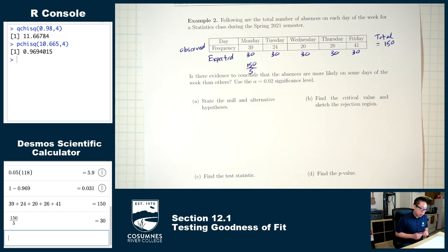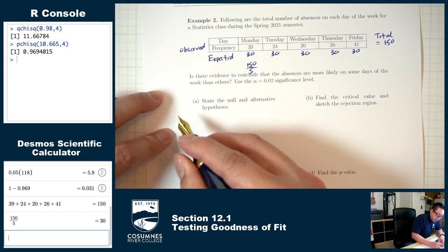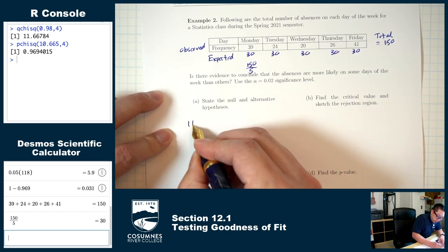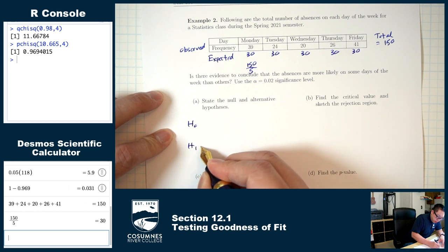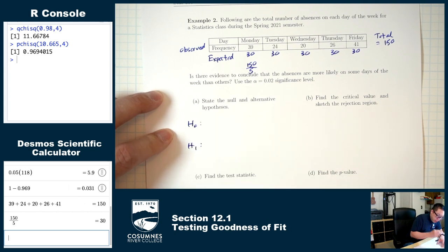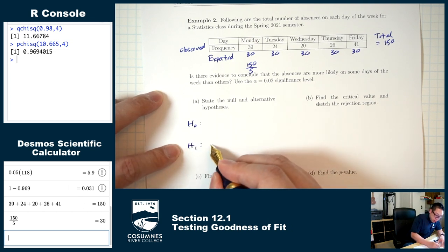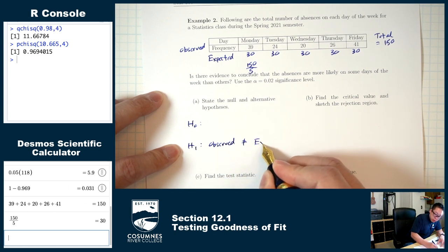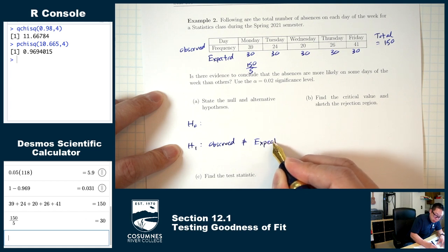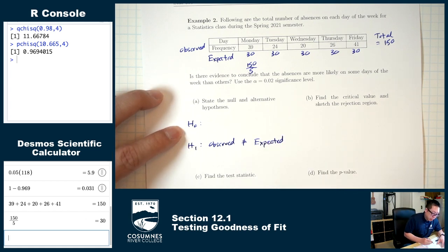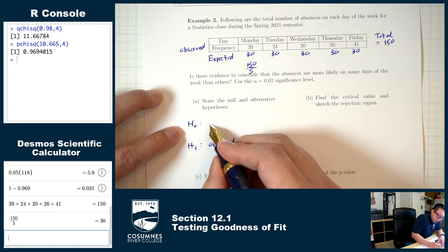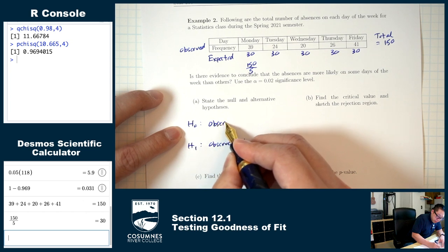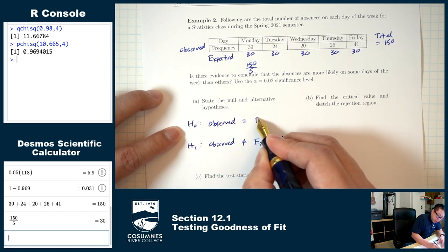Part A: state the null and alternative hypotheses. H1: observed ≠ expected — it's always 'not equals' for a goodness-of-fit test. H0: observed = expected.